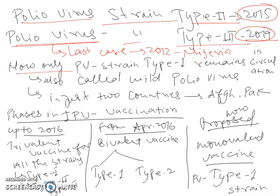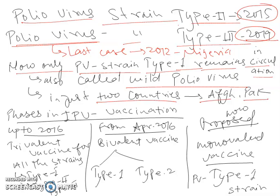Now only poliovirus strain type 1, also called wild poliovirus, remains in circulation, and that too in just two countries — Afghanistan and Pakistan. So in just these two countries, the poliovirus strain type 1 remains in circulation.